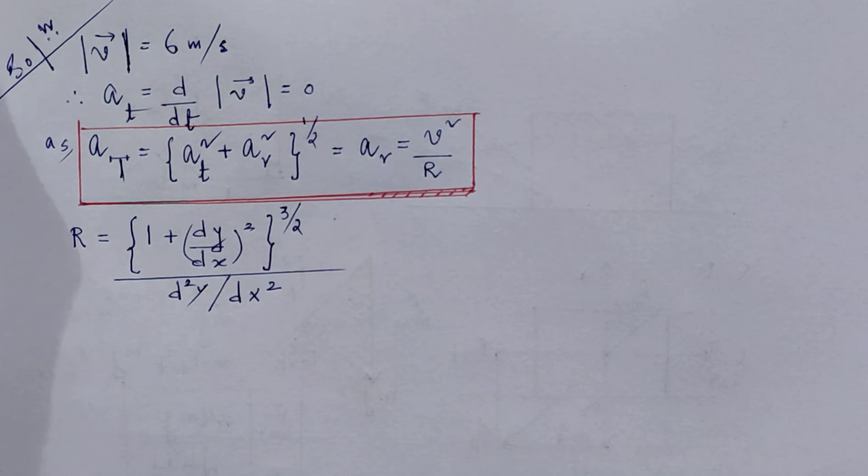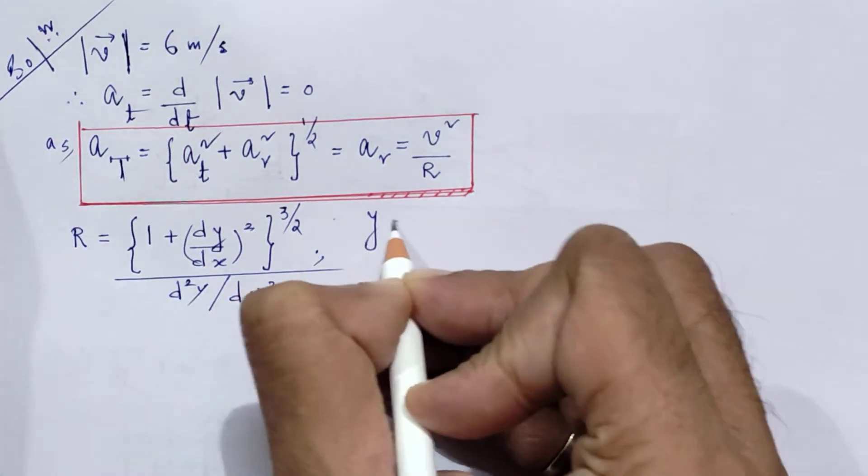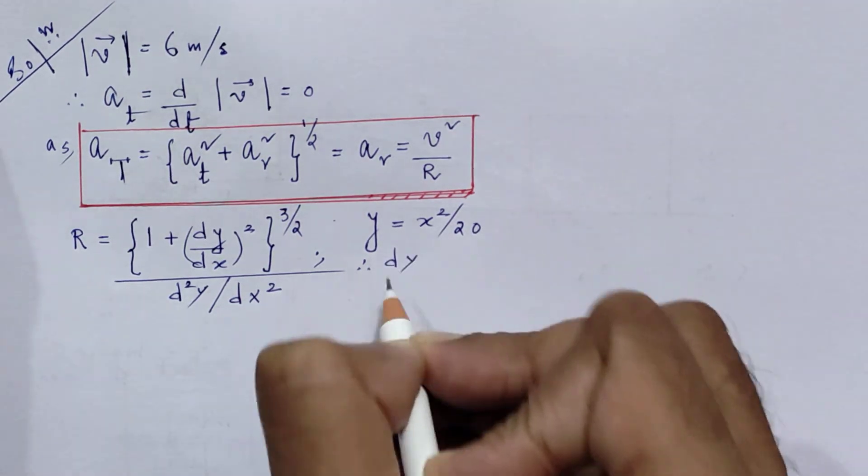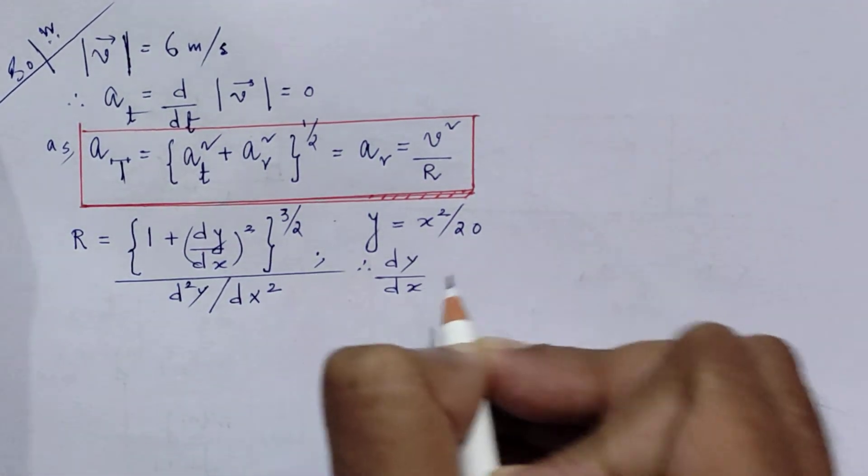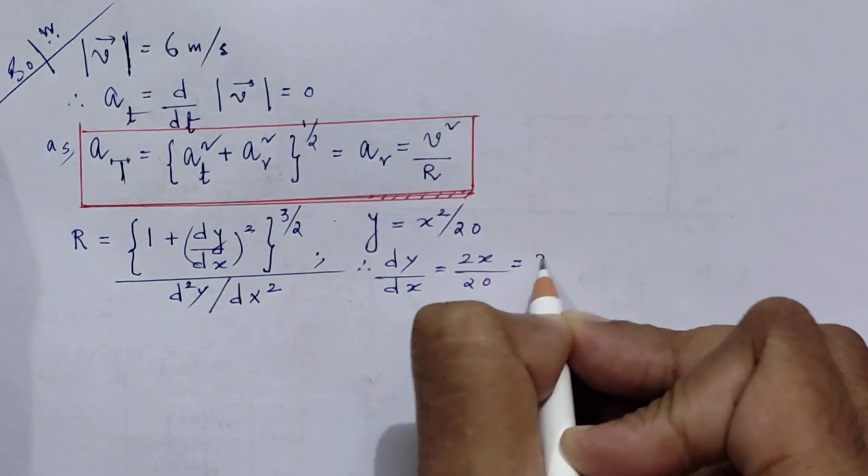Please see that video on radius of curvature core concept and then you will understand how this formula is coming. Now y equals x squared by 20, so therefore dy/dx if I do it is 2x by 20. So that is x by 10.